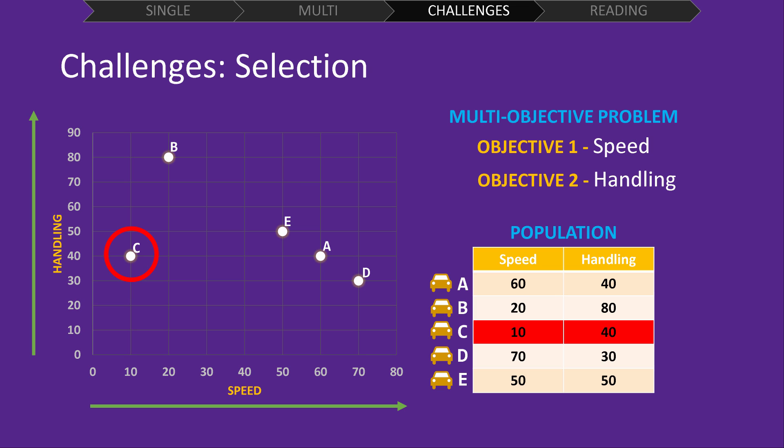After plotting these points, solution C stands out from the rest. It has a very low speed of 10 and a mediocre handling of 40. But what matters is that there are other solutions in the population which are better than solution C in both speed and handling. Let's have a closer look at this to see what I mean.